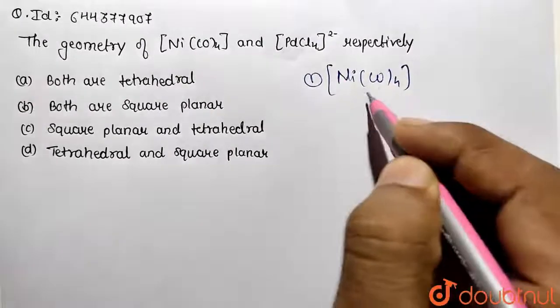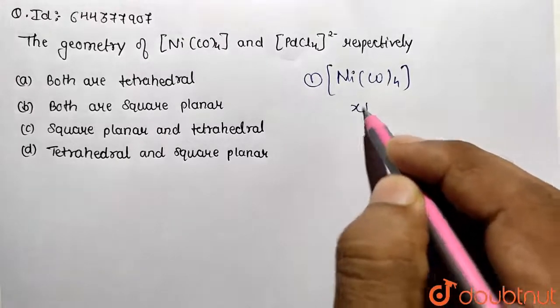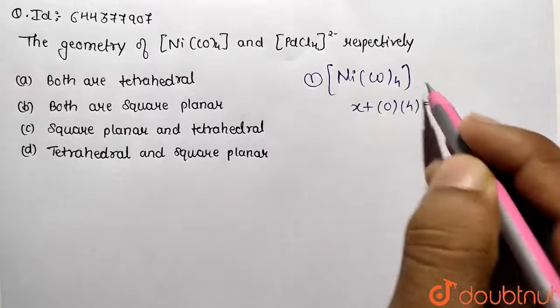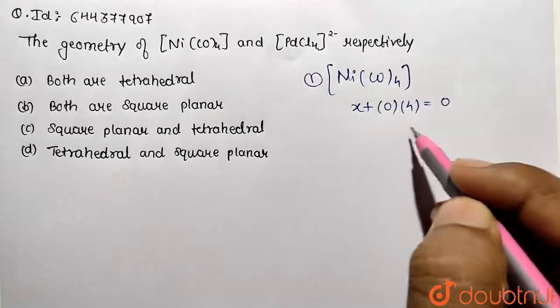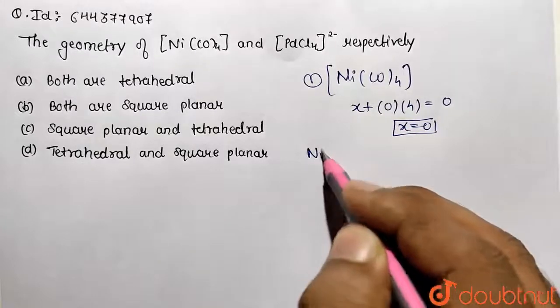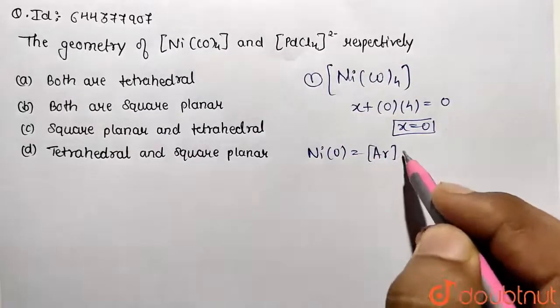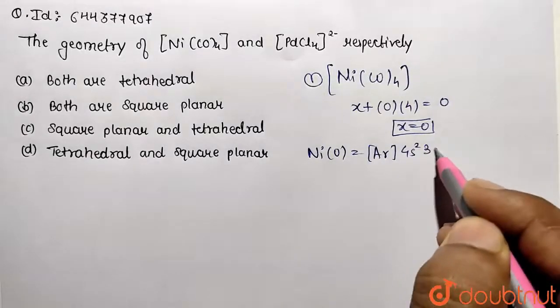Carbonyl is a strong field ligand. First, we determine the oxidation state: x + 0(4) = 0, so x = 0. This means nickel is in its ground state with configuration [Ar] 4s² 3d⁸.